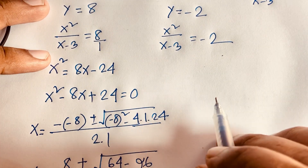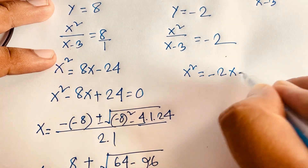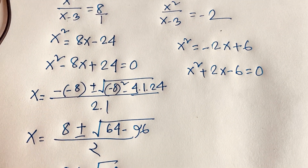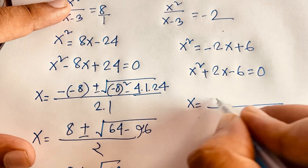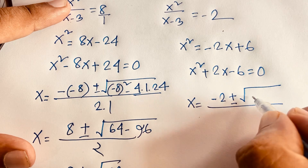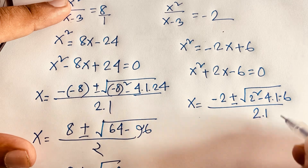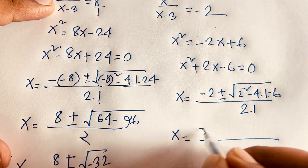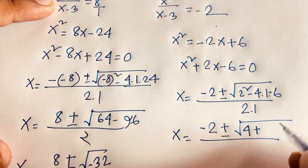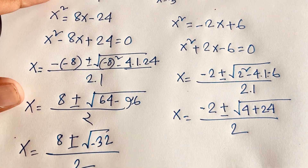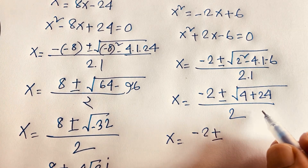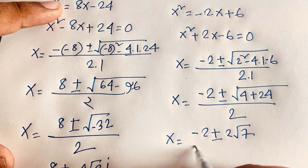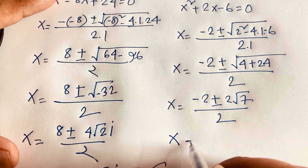Case 2: x² / (x - 3) = -2, so x² = -2x + 6, giving x² + 2x - 6 = 0. Using the quadratic formula: x = (-2 ± √(4 + 24)) / 2 = (-2 ± √28) / 2. Since √28 = 2√7, this gives x = (-2 ± 2√7) / 2.